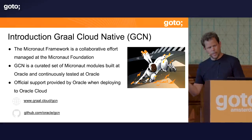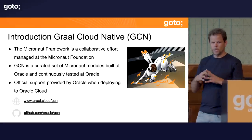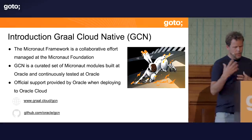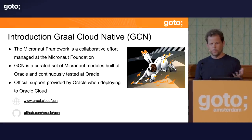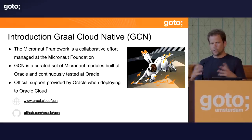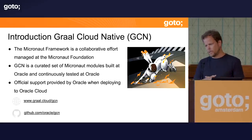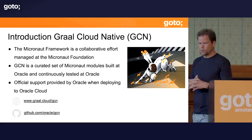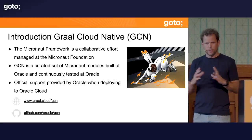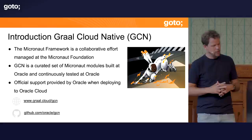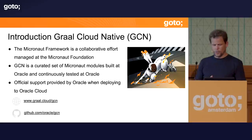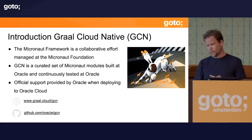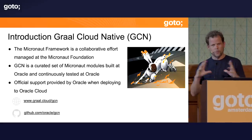Recently at Oracle, we announced Graal Cloud Native, which is a curated and collaborative effort. We have around 15 people working on the Micronaut framework through the Micronaut Foundation. Through that contribution, we want to make available a curated set of modules known to work with Native Image that we can officially support when deploying to Oracle Cloud.